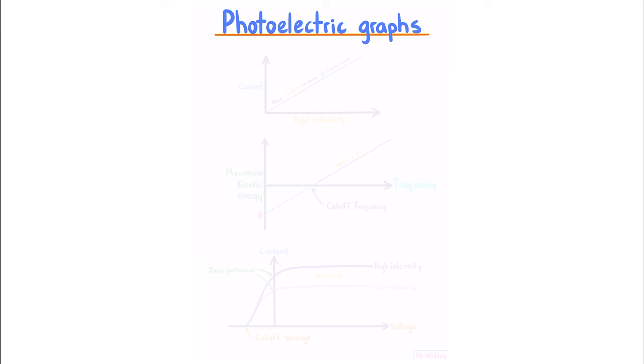Photoelectric graphs. Graphing the intensity of light versus the current in the circuit, we observe an increasing trend because a higher intensity means more photons, which means more photoelectrons, which means more current.